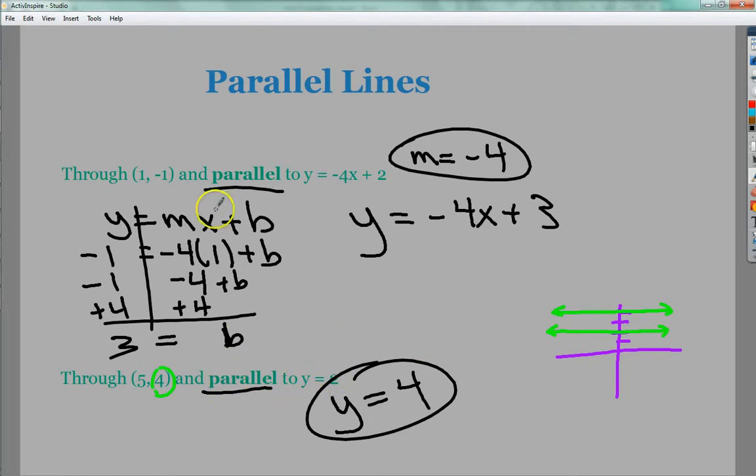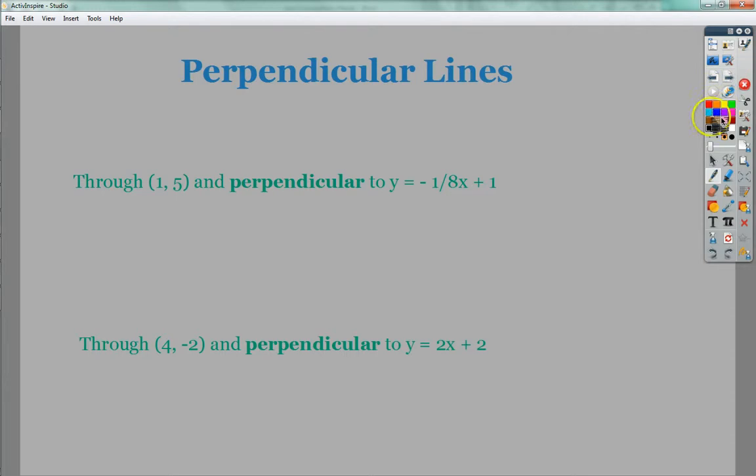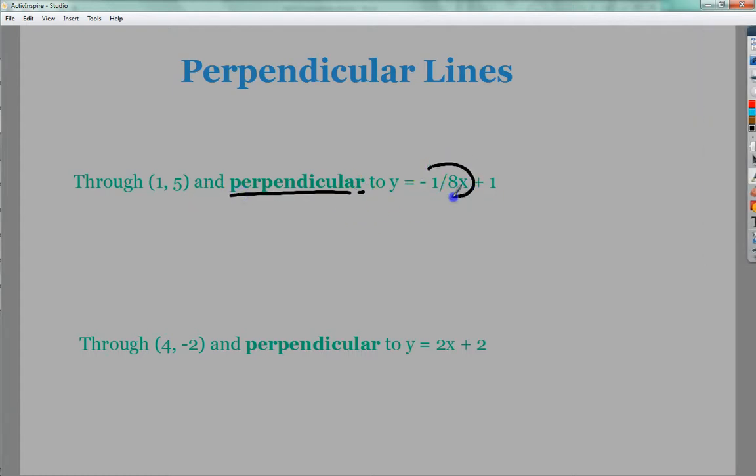But of course, you could use zero for m here and get the same answer. The next one I want to do is a couple perpendiculars just because they're a little bit more complicated, not really that much more complicated. The key here, if I'm looking for perpendicular, is I need to find my original slope.